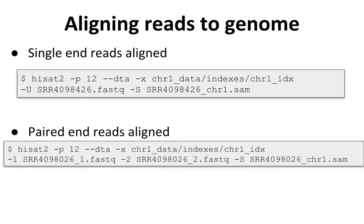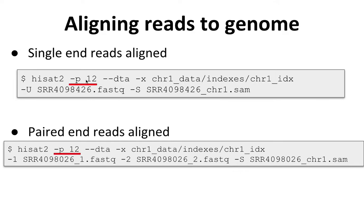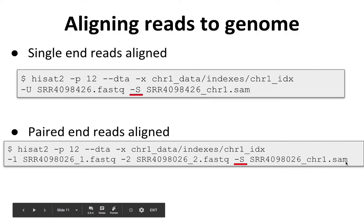When aligning reads to the genome, once you have your index, you call the HISAT2 command. In this example, I called HISAT2 and asked for 12 cores for both a single-end and a paired-end example. Because I wanted to do downstream transcriptome assembly analysis, I used the "--dta" flag. I specified my indexes using the "-x" flag with the path and base names. For single-end reads, I specified reads with "-U", and for paired-end reads I used "-1" and "-2" for pair-1 and pair-2. To specify the output, I used "-S" for both cases and specified the output name as a SAM file.